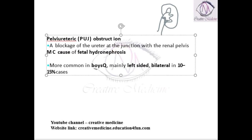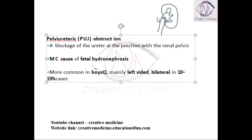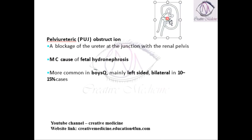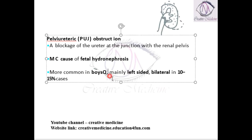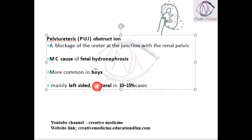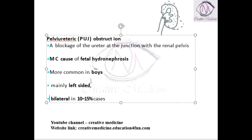Pelvi-Ureteric Junction Obstruction is responsible for hydronephrosis in the fetus. Because there is a block between the ureter and the renal pelvis, urine cannot flow from the pelvis to the ureter, so urine gets accumulated and slowly there will be development of fetal hydronephrosis. This Pelvi-Ureteric Junction Obstruction is most common in boys, mostly seen on the left side, and it is bilateral in around 10 to 15% of cases.